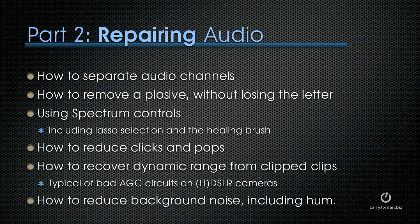Now that we know how to import audio files and move projects from Final Cut and Premiere to Audition, I want to concentrate on how to make our audio sound better. I'll show you how to separate multiple channels into single audio channels, how to remove a plosive like a P that's too close to the microphone without losing the sound of the letter, use spectrum controls including the lasso selection and the healing brush for frequency-based cleanup, how to reduce clicks and pops, and how to recover dynamic range from clipped clips — typical of HD SLR cameras with bad AGC circuits pushing too much to the top. I'll show this both graphically and orally.